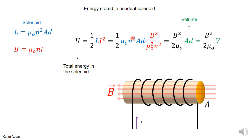Now if you cancel things, you'll see the N squared will cancel with the N squared, and one of the mu naughts will cancel with the other mu naught, and you end with this result. A times D is the volume of the inductor, so you can write this as B squared over 2 mu naught times the volume. The total energy in the solenoid is B squared over 2 mu naught times the volume of the solenoid.